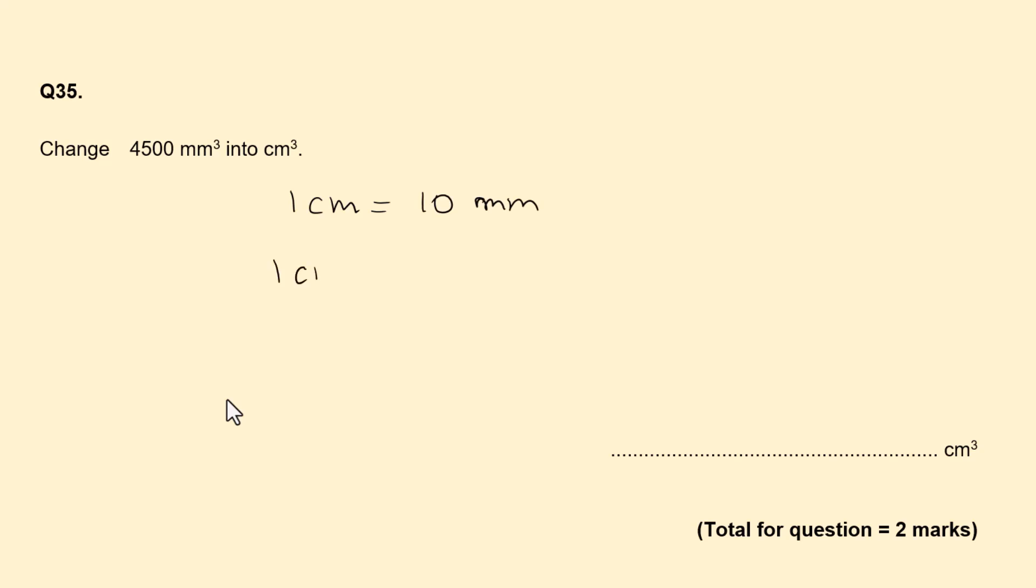So 1 centimeter cubed is going to be 1 centimeter times by 1 centimeter times by 1 centimeter. So 1 centimeter cubed in millimeters will be each of these centimeters will change into 10 millimeters, 10 millimeters, 10 millimeters.